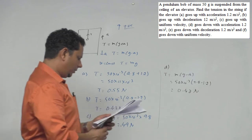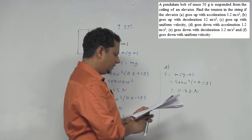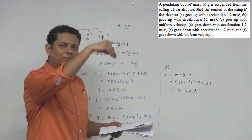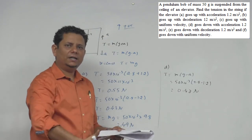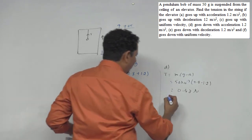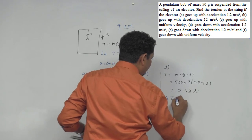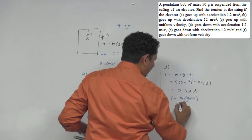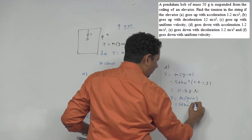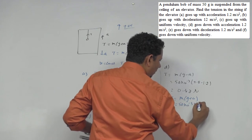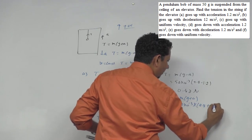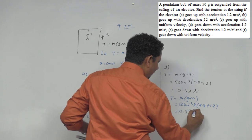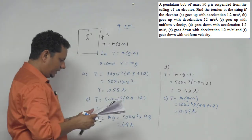Next option है, goes down with deceleration 1.2. Deceleration का मतलब ये है कि velocity नीचे है लेकिन आपका acceleration ऊपर लग रहा है, so आपकी tension हो जाएगी M(g+a), यानि कि 50 into 10 to the power minus 3, multiplied by 9.8 plus 1.2. इसकी value आ जाएगी 0.55 Newton.